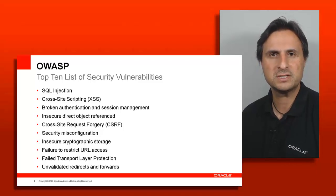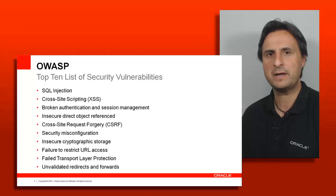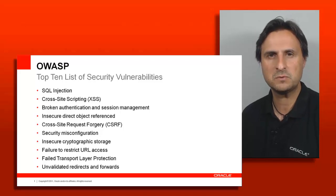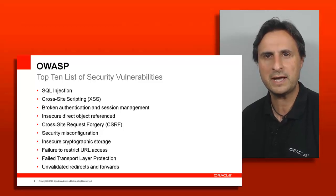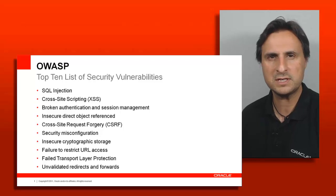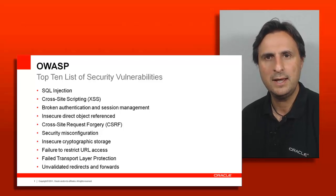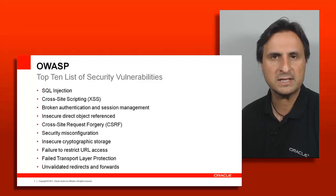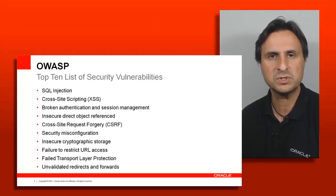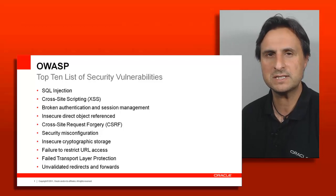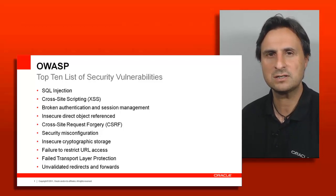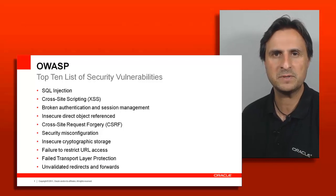We have different risks as identified by OWASP: SQL injection, cross-site scripting where people try to execute their JavaScript in your application context, authentication mismanagement, and insecure redirects. For example, direct references to objects like a report where someone could guess the sequence number and start guessing other people's documents.